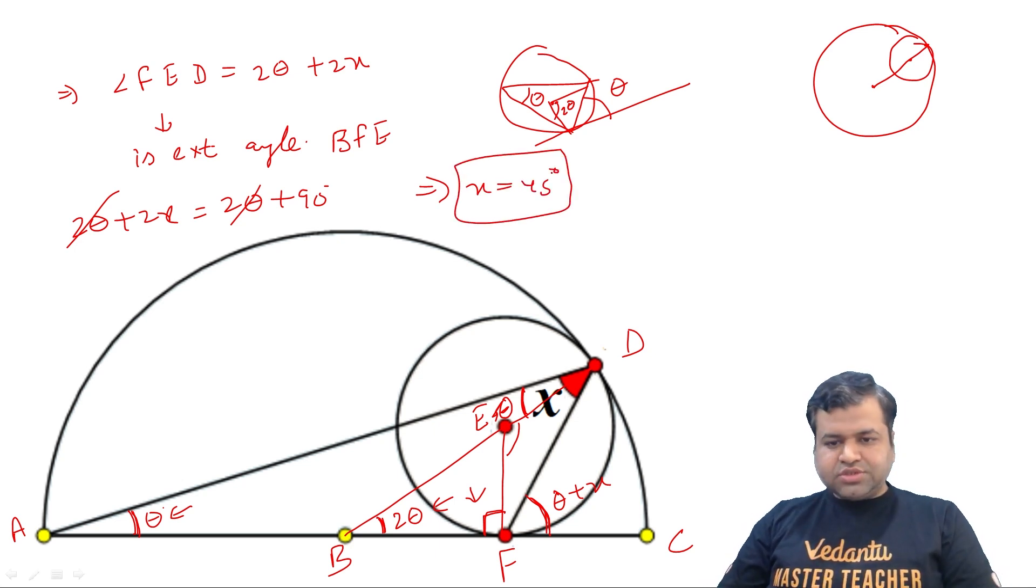Clearly 2 theta is getting cancelled with 2 theta, and this implies x is 45 degrees. So x is 45 degrees.